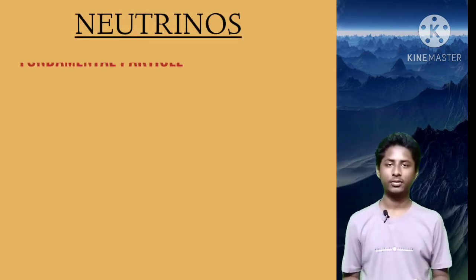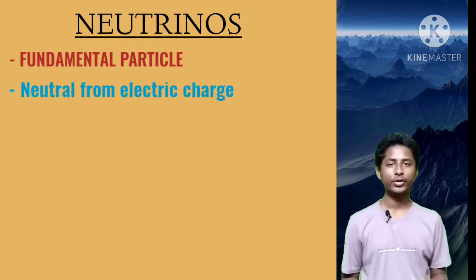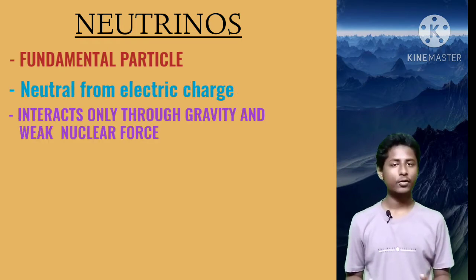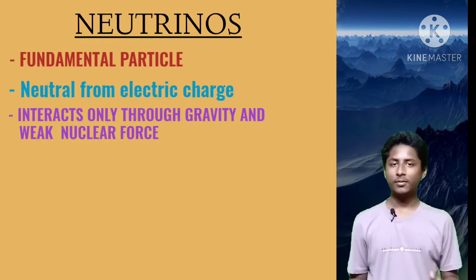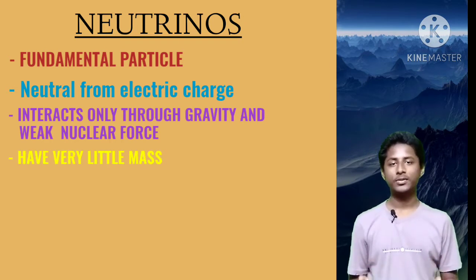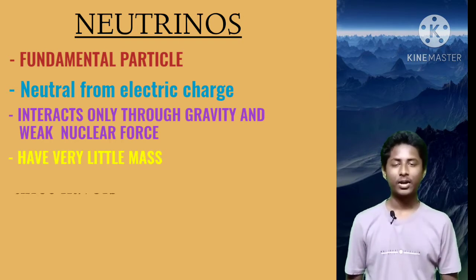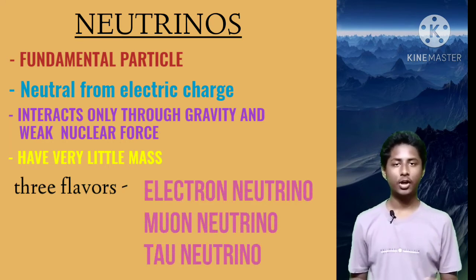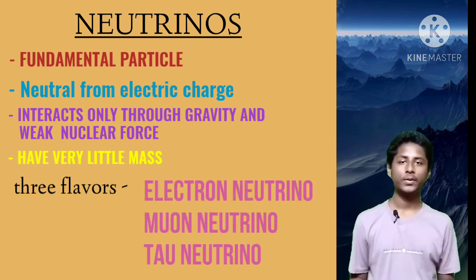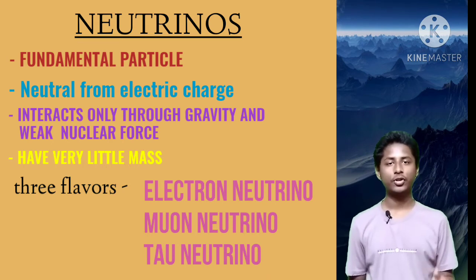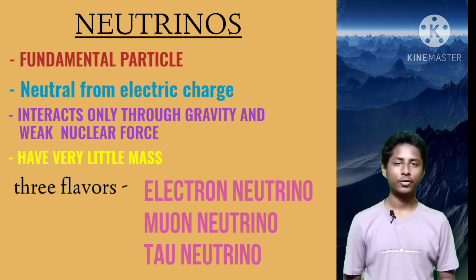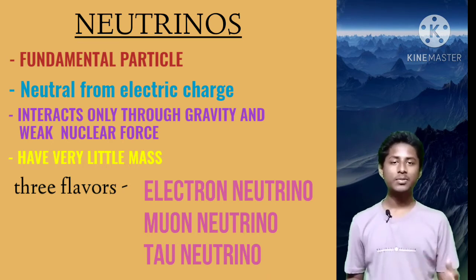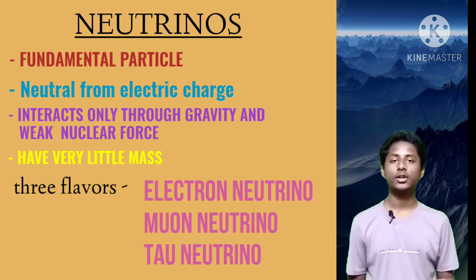So first, what are neutrinos? Neutrinos are a class of fundamental particle. They are neutral particles which interact only through gravity and the weak force. Neutrinos have very little mass — in fact, for a very long time scientists thought they were massless. There are three flavors of neutrinos: the electron neutrino, muon neutrino, and tau neutrino. They are so named because in most interactions where a neutrino is produced, the partner particle also shows up, helping us identify the flavor of the original neutrino.